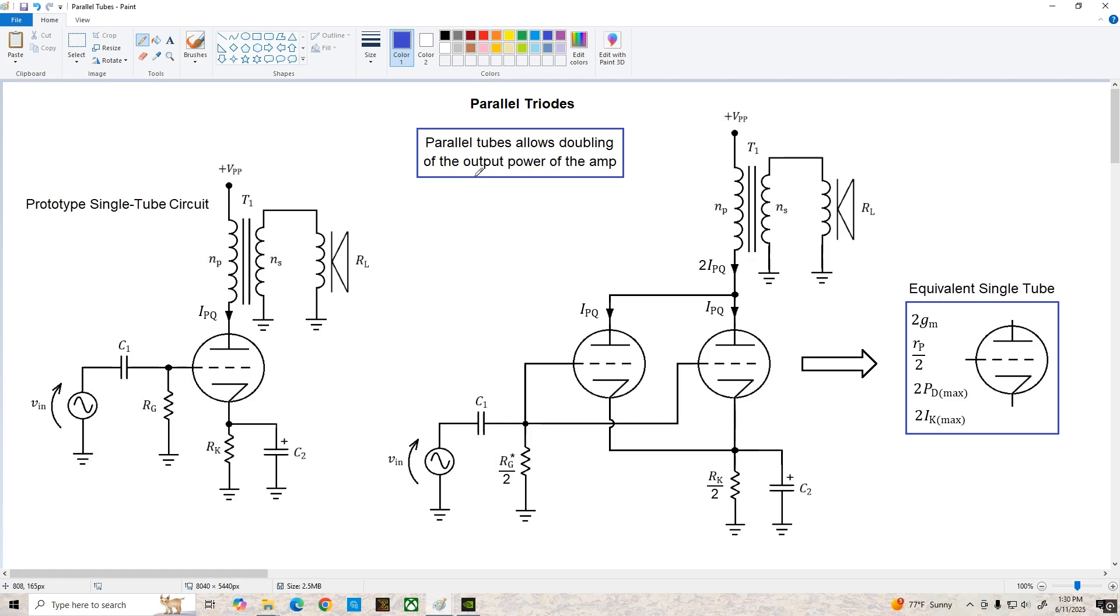Or pentodes for that matter is to increase the power output capability of an amplifier. Basically if you connect two triodes or pentodes in parallel you can double the power output of the amplifier. We're going to take a look at the class A transformer coupled power amplifier today. On the left hand side we've got the typical circuit that we would use to implement this amplifier and on the right we've got a parallel connection of two triodes that we'll use to double the output power.